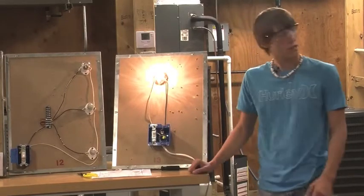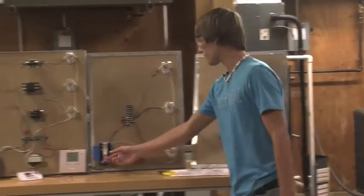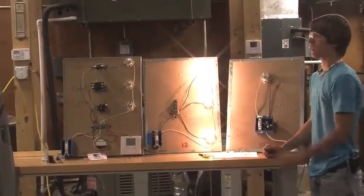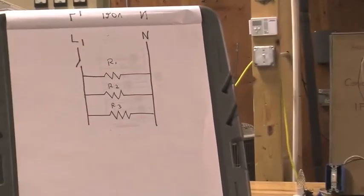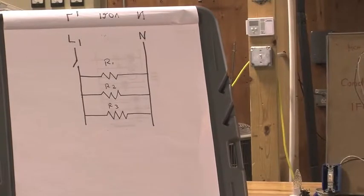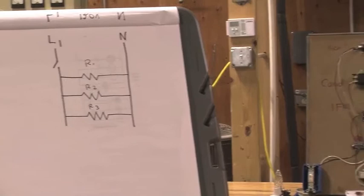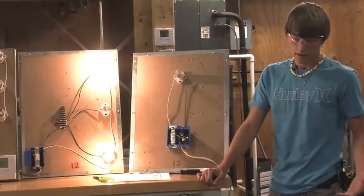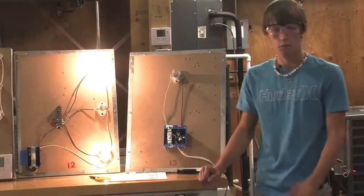This board right here is basically wired up the same as this one - L1 coming from the breaker and same for your neutral. This is actually a parallel circuit, so you can actually unscrew a light bulb, and if one burns out then you still have power to all the other ones. Unlike, say, if you had a Christmas tree light and one of the lights goes out, then the whole string is done for.